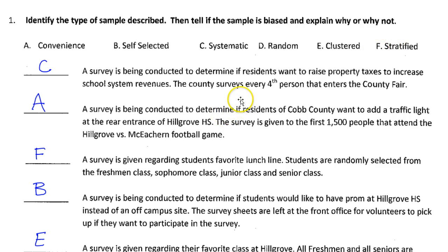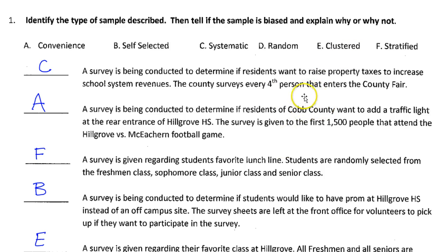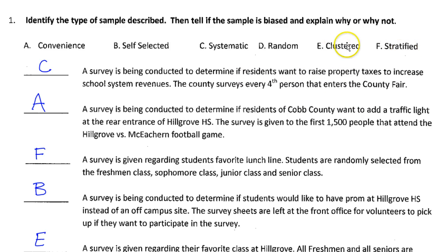We specifically picked 20 parents from each school — we didn't pick whole schools, so it's not clustered. Clustered would be if, say, we picked 5 schools out of the 20 and asked all the parents from those schools. But we picked 20 from each school, so that's going to be stratified. When you're doing whole groups, that's clustered, but when you're doing a certain amount from each group, that's stratified.